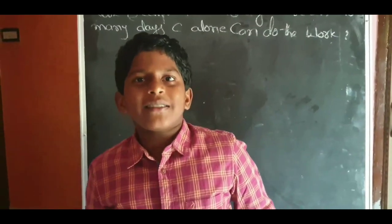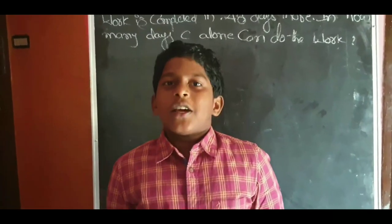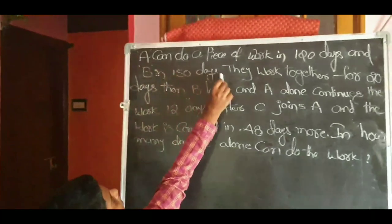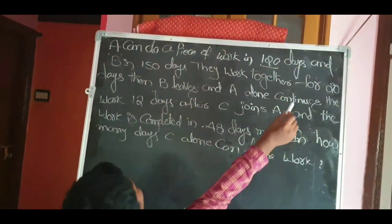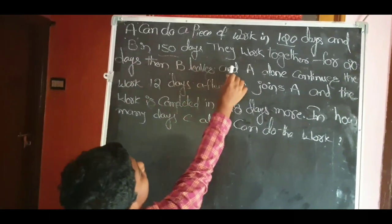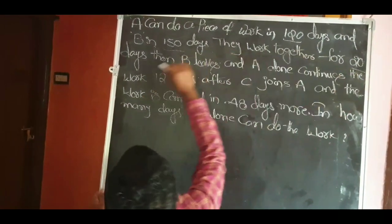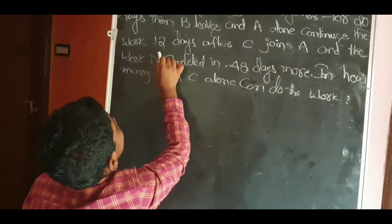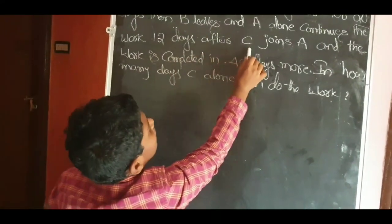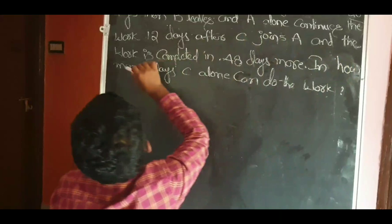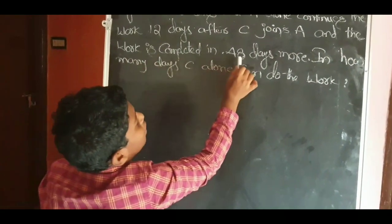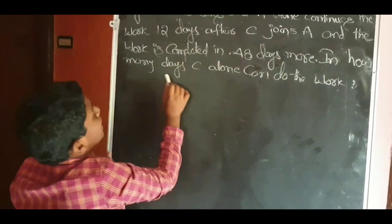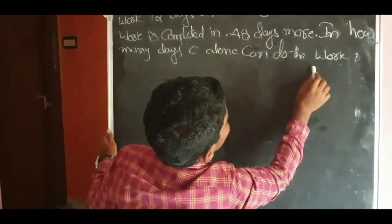Welcome to Joshua Institute Online Classes. My name is Neetam Yoyal, son of Joshua. Today I am going to take a Time and Work topic. A can do a piece of work in 120 days and B in 150 days. They work together for 20 days. Then B leaves and A continues the work for 20 days, after which C joins A, and the work is completed in 48 days more. How many days can C alone do the work?